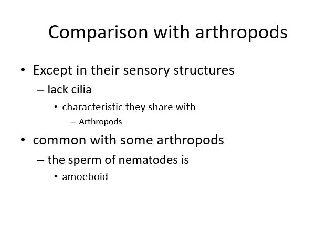Arthropods are compared with Aschelminthes or nematodes. Except for their sensory structures — both have lophophilia characteristics — they share traits with some arthropods. The sperm of nematodes are amoeboid.